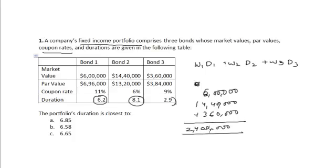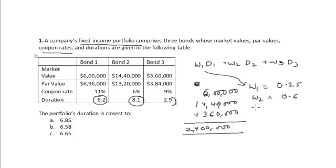The weight w1 corresponding to bond one is six lakh divided by twenty-four lakh, equal to 0.25. W2 is the market value of bond two divided by the total portfolio market value, equal to 0.6. Similarly, w3 is three lakh sixty thousand divided by twenty-four lakh, equal to 0.15.